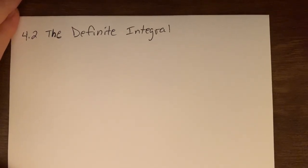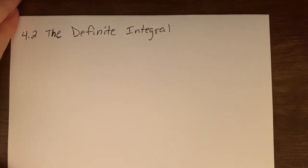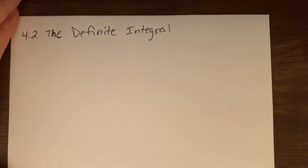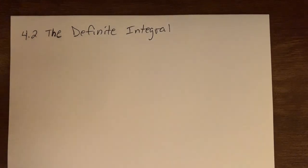In this video, we'll start getting into section 4.2 and formally discuss what we call the definite integral. We've had a few sections where in 3.9 we discussed the idea of the antiderivative, then in 4.1 we started talking about area under the curve. This starts to connect the ideas a little bit more, and then in 4.3 we'll talk about the fundamental theorem of calculus, which will be a big section tying all these ideas together.